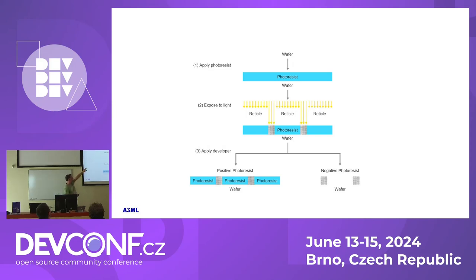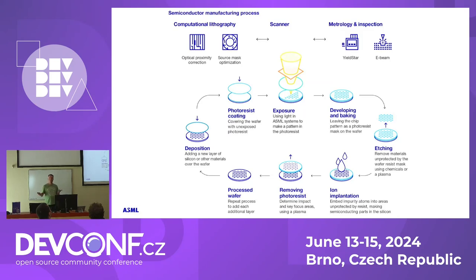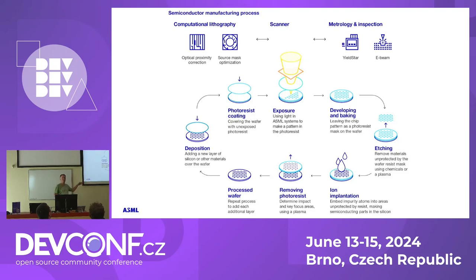We begin with that wafer, we put the photoresist on it, then we have the reticle. In some points the light shines through, and then we can decide one of two options: either we keep the parts where the light has shone on, or we remove those parts. We call that either positive or negative photoresist. That was basically the creation of one layer. You can have up to 200 layers, and this whole cycle is executed 200 times — apply the coating, create the pattern, bake it, etc. So this is a process that can take months to complete.